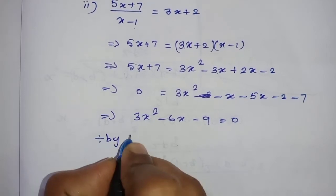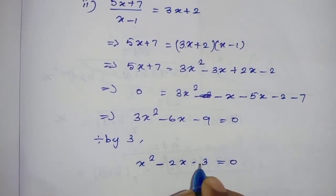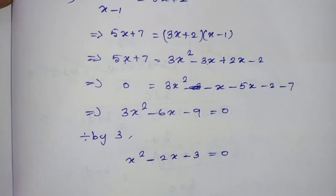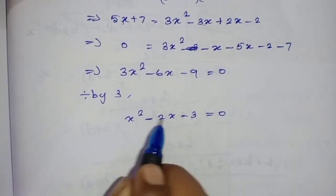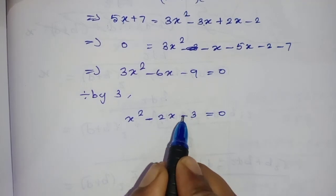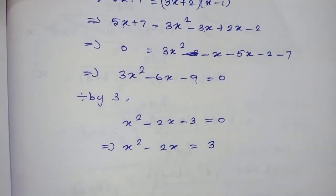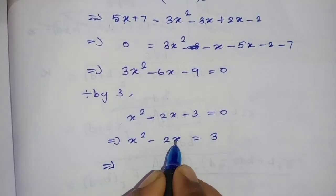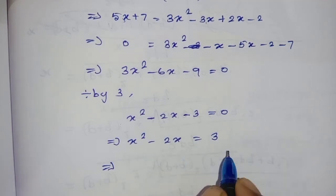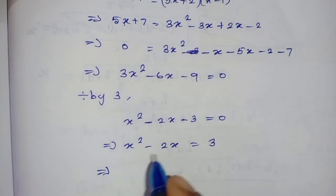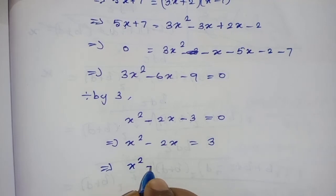Now divide the whole equation by 3, giving x² minus 2x minus 3 equal to zero. This is the standard quadratic equation form. Since the coefficient of x² is already 1, we go straight to shifting the constant: x² minus 2x equals 3. Then we take half of the coefficient of x — half of 2 is 1 — and add 1² to both sides.